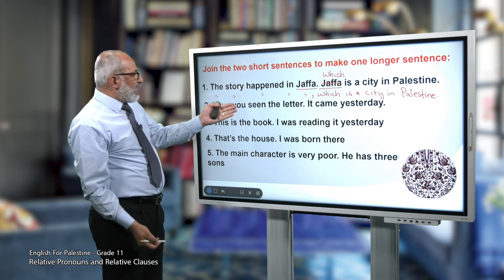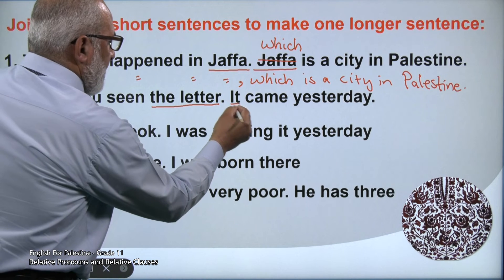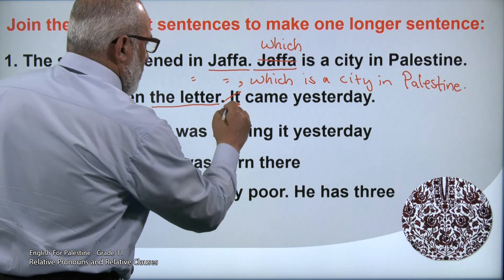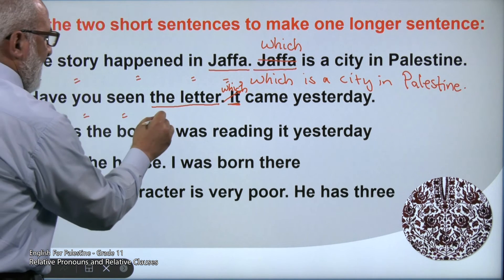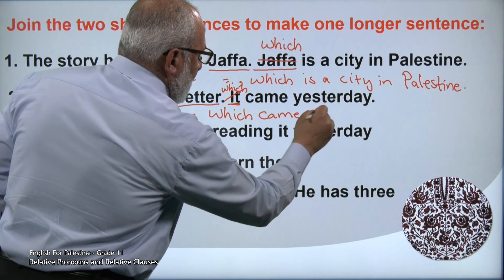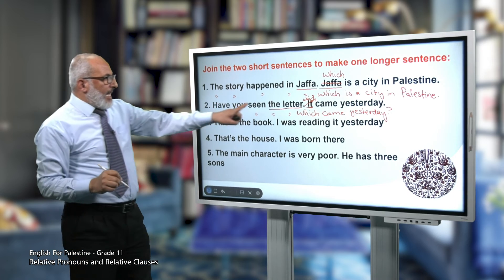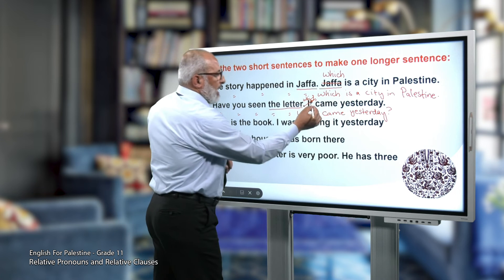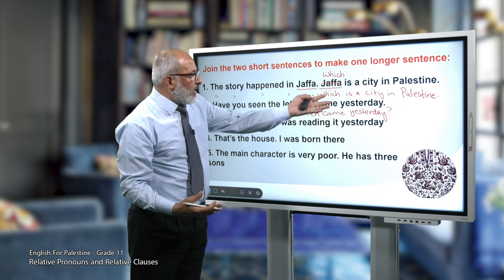Number two: 'Have you seen the letter? It came yesterday.' The common words are 'the letter' and 'it.' We omit 'it' and put 'which' because it is a thing. It becomes: 'Have you seen the letter which came yesterday?' This is a defining relative clause because it adds important information about the letter — which letter? The letter which came yesterday.